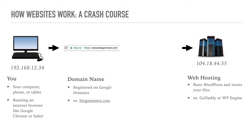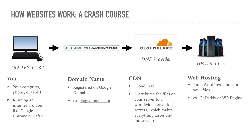There's a missing piece in the puzzle right in the middle, and that is going to be your DNS provider. DNS stands for Domain Name System. When you type in blogwinners.com to your browser, that is just a word, but your computer has to know what the IP address is of the web hosting provider. So DNS translates blogwinners.com into an IP address like 104.18.44.55, because otherwise you'd have to remember IP addresses, which nobody would be able to do. That's why DNS actually exists.